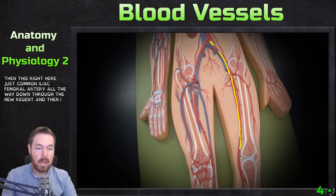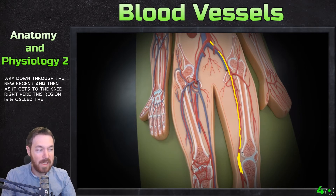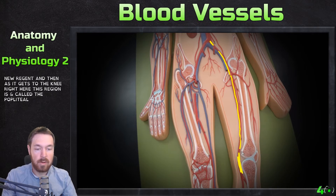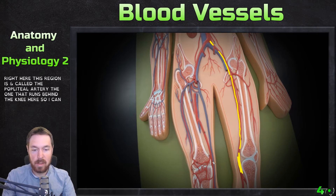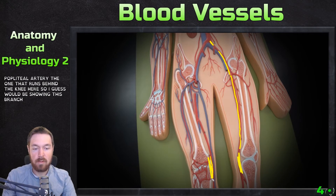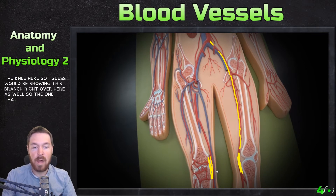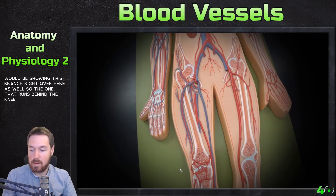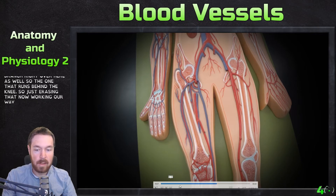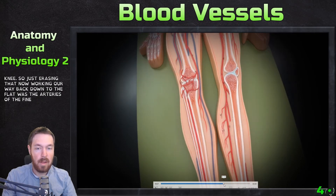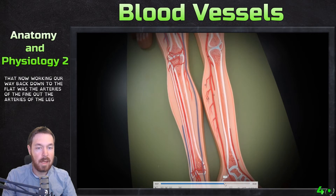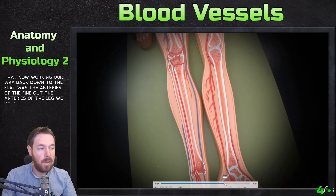The femoral artery runs all the way down through the knee region. As it gets to the knee, this region is called the popliteal artery — the one that runs behind the knee. So that covers the arteries of the thigh.